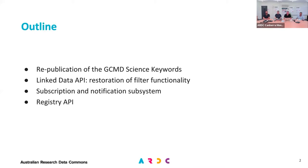So just these four points so far, and then anything else you want to know about you can ask Joel. Work on the GCMD science keywords and our republication of those in Research Vocabularies Australia. A little tweaking to the Linked Data API, also known as Sysbox, that we've done for our service. A subscription notification system, which we'd really like you all to use. And the registry API, which is perhaps not for everybody, but if you want to do interesting things, it's a means to do that — to take advantage of the vocabularies that are in RVA.